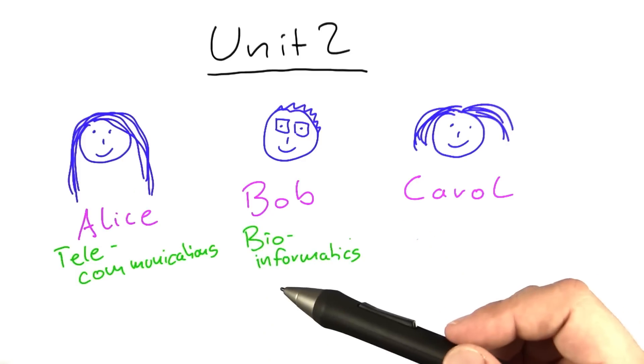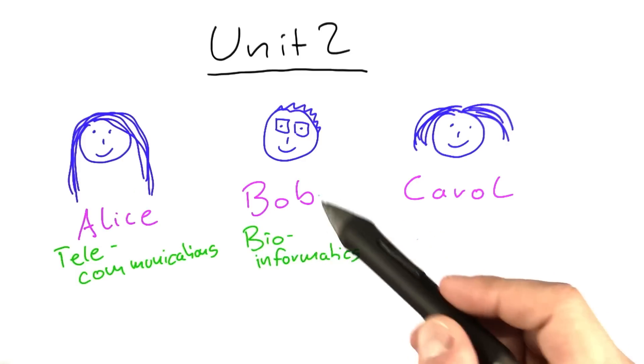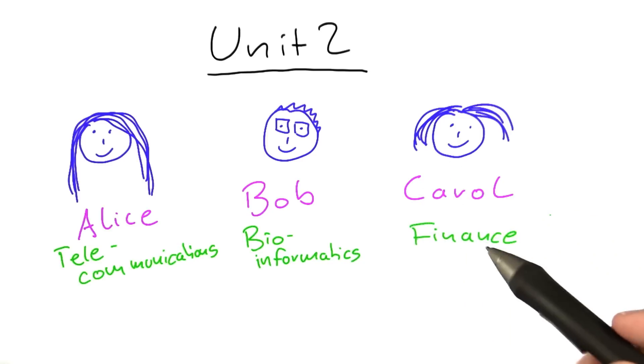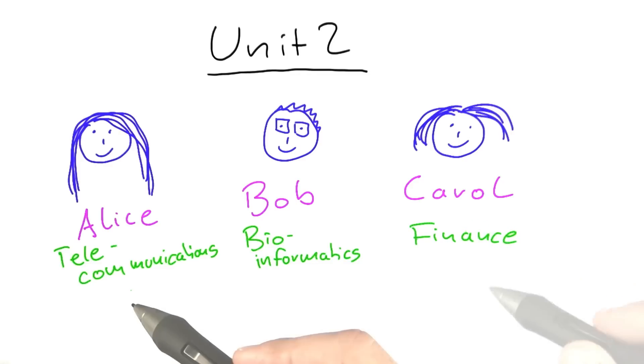Bob was working in bioinformatics, and his job was to find clusters of data in genetic analyses. And finally, Carol was working in finance, and she has been tasked with selecting a portfolio of assets that consists of as many assets as possible, but it has to observe a number of restrictions on which assets she can put together in one portfolio.